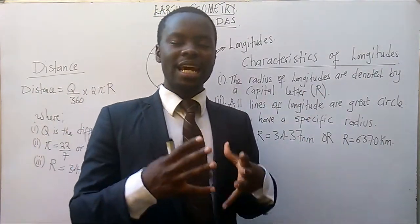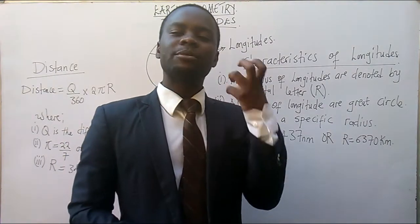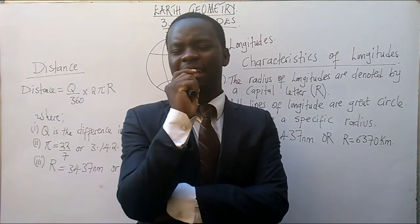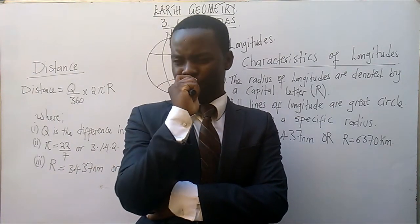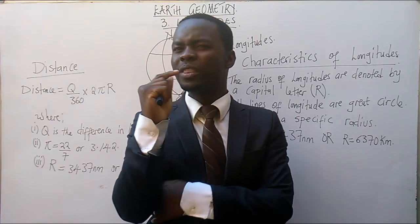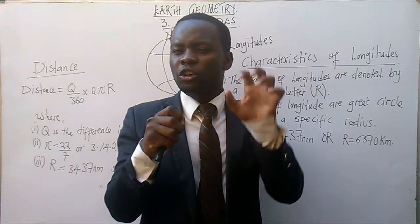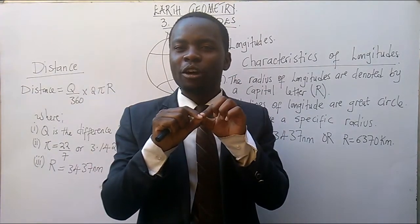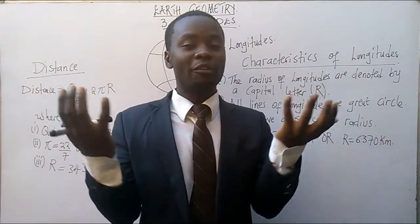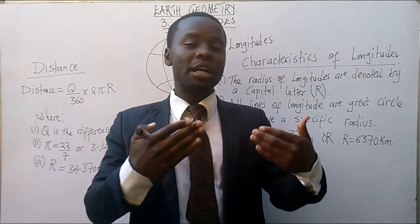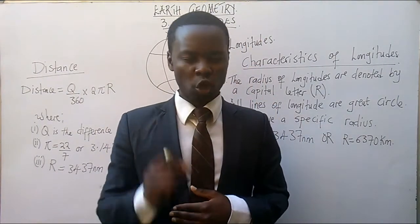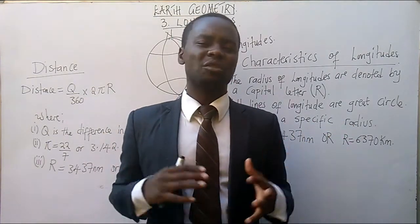The third and last characteristic of longitudes is that they have a specific radius. Since longitudes are great circles, and great circles are circles on the Earth's surface whose radius equals that of the Earth, the value of the radius is already known. No need to stress about calculating it — that's a good part of longitudes.